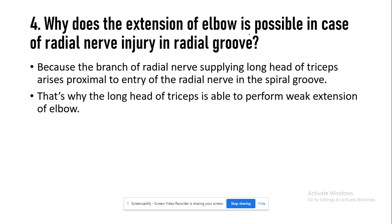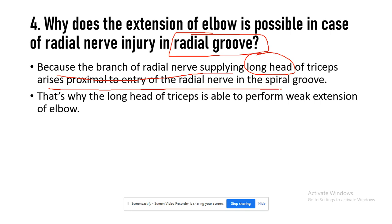The next question is: why is extension of the elbow still possible in the case of radial nerve injury in the radial groove? The key point is that the triceps has three heads, and its long head is supplied by the radial nerve before the nerve enters the spiral (radial) groove. Because the branch supplying the long head of triceps arises proximal to the radial groove, the long head of triceps is still able to perform some extension at the elbow joint.